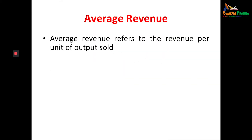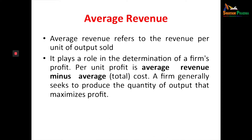Next, average revenue. Average means per unit. Average revenue refers to the revenue per unit of output sold during a given period of time. Average revenue plays a role in the determination of a firm's profit — when a firm calculates its profits, average revenue plays a very important role. Per unit profit is related to average revenue.